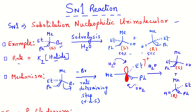In the first step of the mechanism, the carbon-bromine bond (carbon-halogen bond) breaks to produce the corresponding carbocation. Formation of this carbocation is very slow since a stable molecule is producing a very unstable intermediate. That's why the activation energy for this step is very high, making it the rate-determining step.